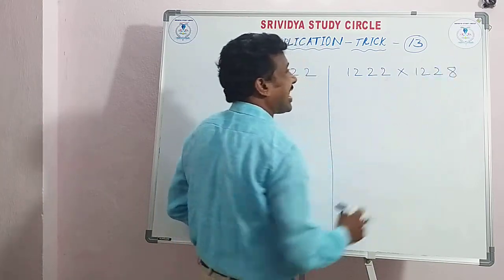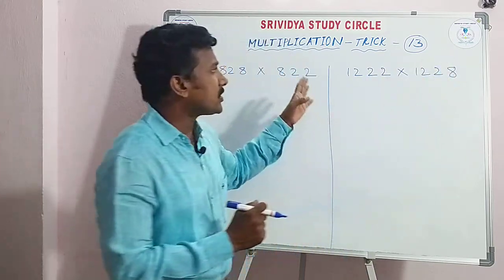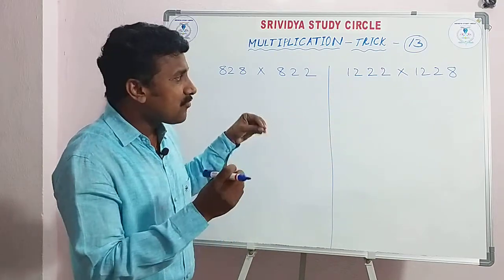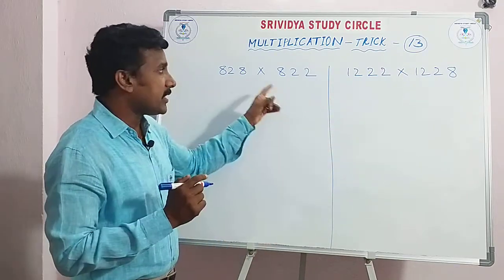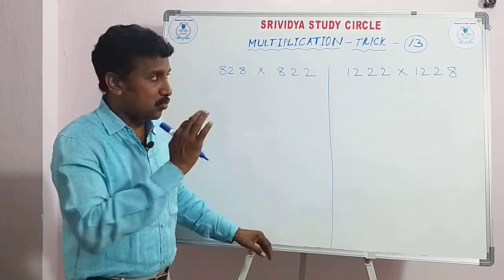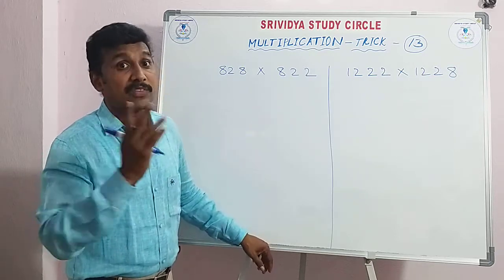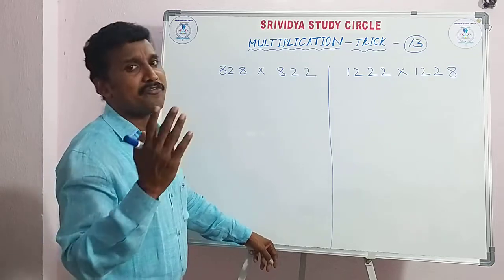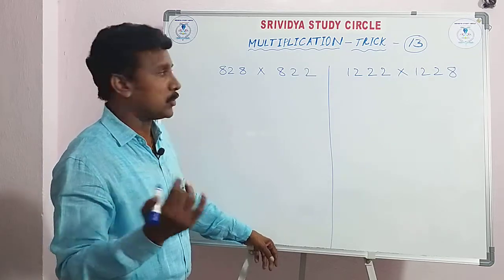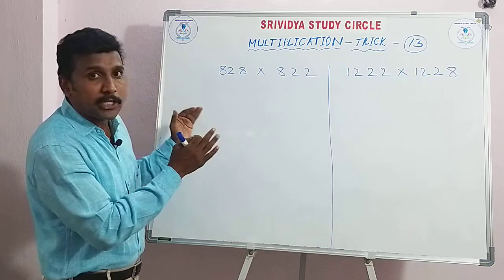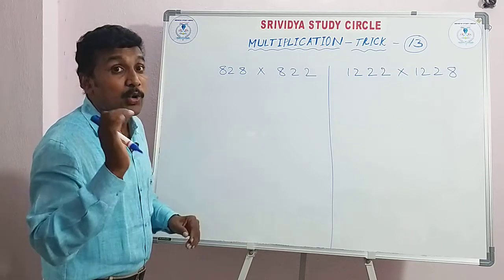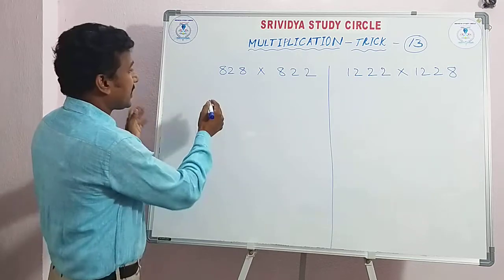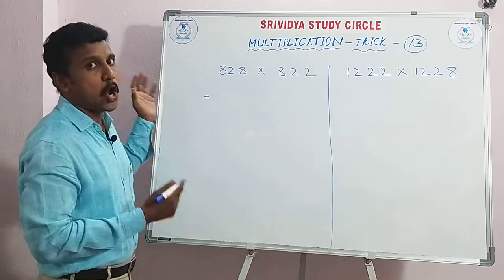Generally in churches and competitive exams, this takes one minute 47 seconds. But with this shortcut, just within 25 seconds you can calculate. Yes, within 25 seconds you can solve these — that is how fast this method is.